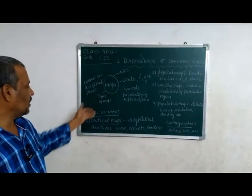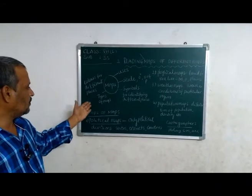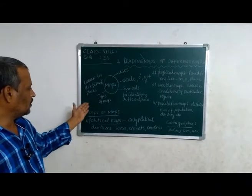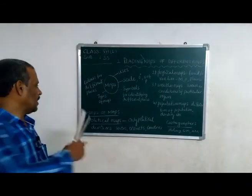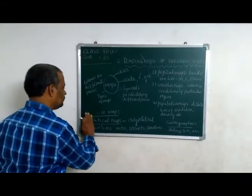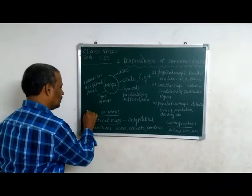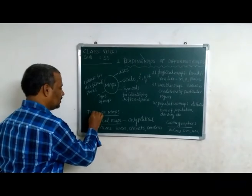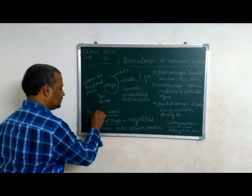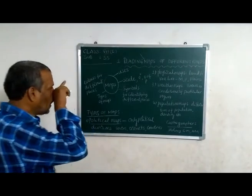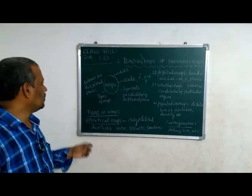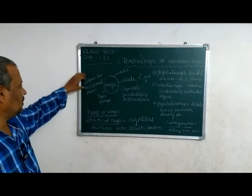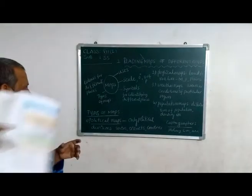Types of maps are: political maps, physical maps, weather maps, and population maps. Colors are used for different places — for example, blue color indicates oceans.